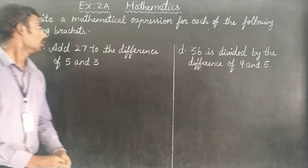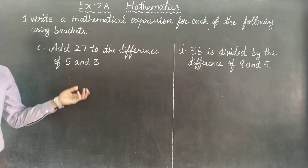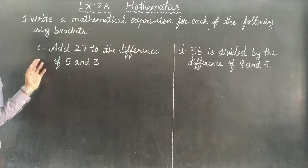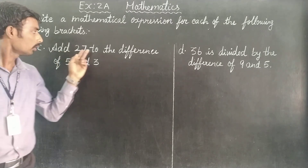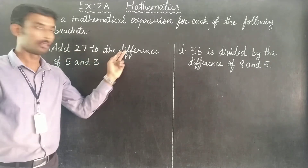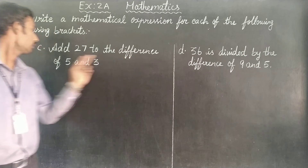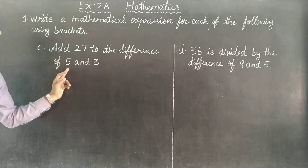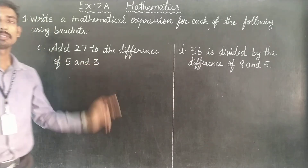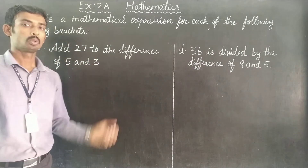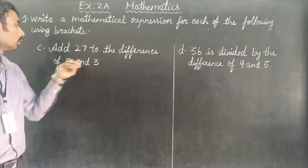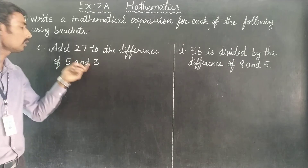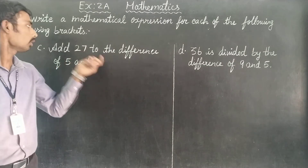Brackets. So first, c is important: add 27 to the difference of 5 and 3. So add 5 and 3 — difference.